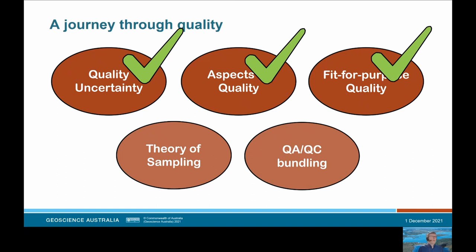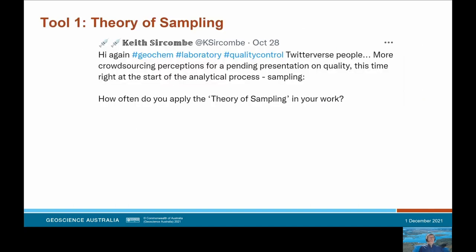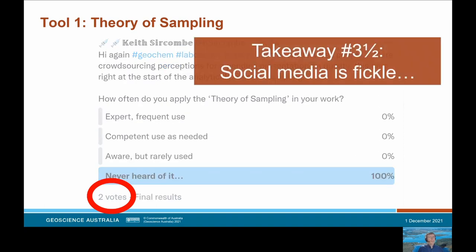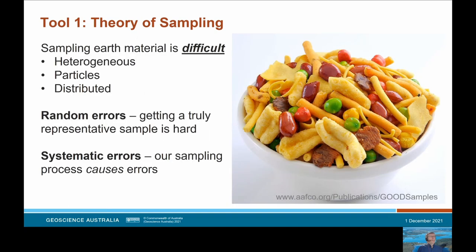Let's turn to a couple of tools you can use in your work: the theory of sampling and QAQC bundling. I asked the geochemistry Twitterverse how often they apply the theory of sampling to their work — it turns out not a lot, with a grand total of two votes, and both had never heard of it. So for the next time you come across a social media poll, I'll run through the theory of sampling. This isn't to say anyone is doing anything wrong — all scientists will have been trained on some of this. This is about giving you a broader tool set and nomenclature to consider when designing sample protocols and communicating that more broadly.